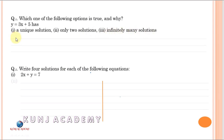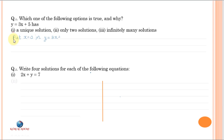Put x equal to 0 in the given equation y is equal to 3x plus 5. We get y is equal to 0 plus 5, therefore (0, 5) is a solution.